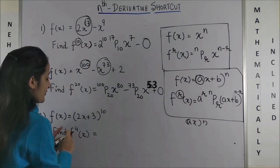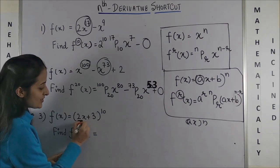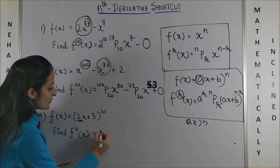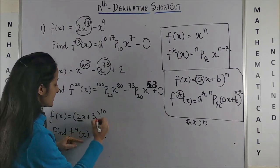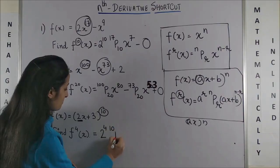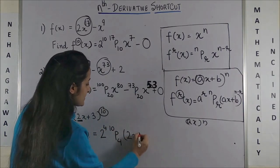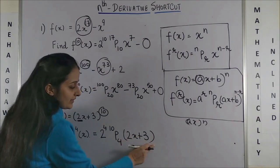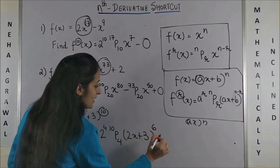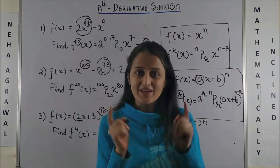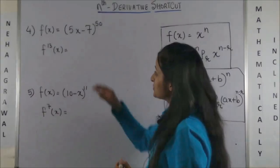Question 3. In order to find the fourth derivative, first of all since there's a constant attached with x, you can simply write it as 2 raised to power 4. Next it would be 10P4, and then you write the entire term as it is. After writing the entire term as it is, 10 minus 4 which is 6. And bingo, that's your answer.